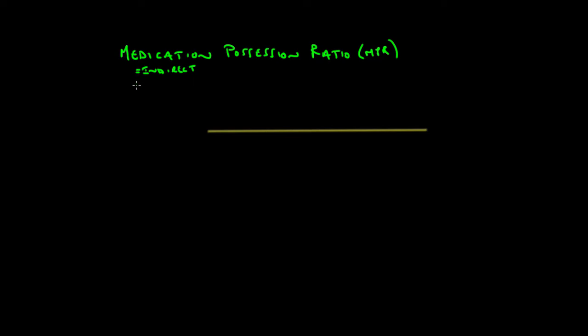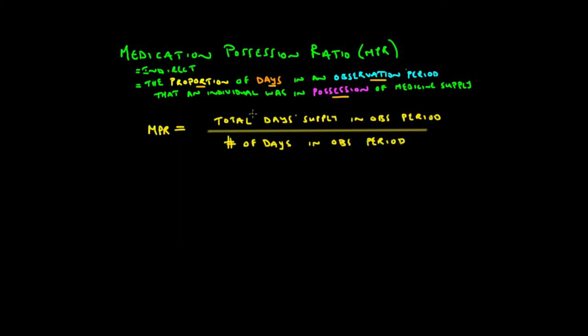Now what is the MPR? The MPR is typically defined as the proportion of days during an observation period that an individual was in possession of medicine supply. We can write this in a different way and say that the medication possession ratio equals the total days of medication supply that the patient has in a particular observation period over the number of days in the observation period.